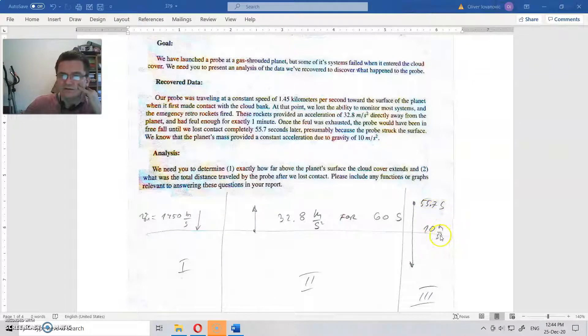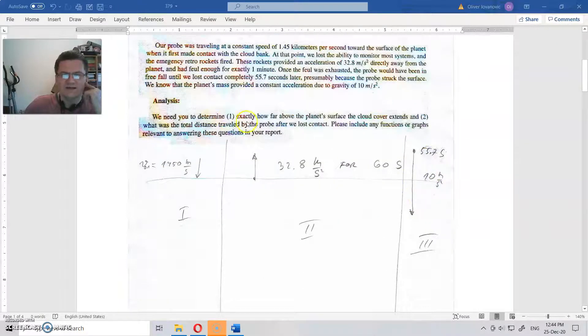In this condition, it fell for 55.7 seconds. The question was: how far above the planet surface does the cloud cover extend, and what is the total distance traveled by the probe?